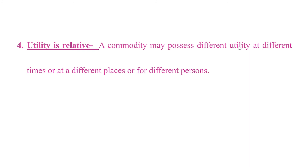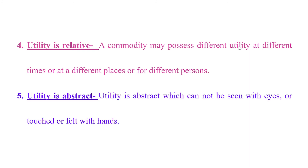The next characteristic is that utility is abstract — it cannot be seen or touched. As we have already noted, after utilizing a good or service we get satisfaction as a result. We cannot see or touch that satisfaction; we can only feel it after we utilize goods and services to fulfill our needs or wants. So these are some of the important characteristics of utility.